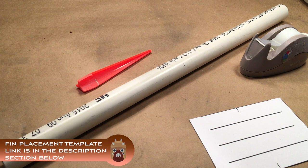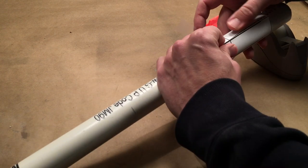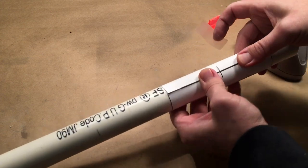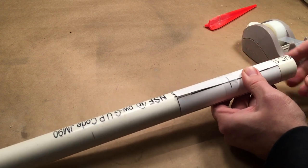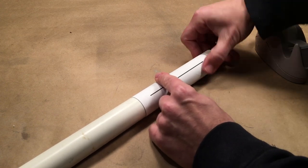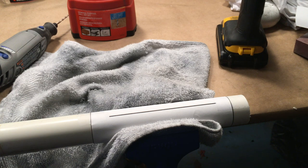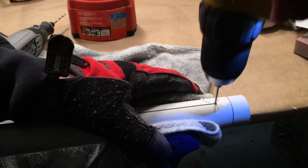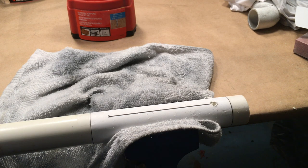Print out the fin placement template and affix it to the 22 inch length of one inch PVC pipe. Tape it down with cellophane tape. Secure the pipe in a vise. Drill a 1/8 inch hole in one of the ends of the template lines. Using a Dremel cutting bit, cut along the line. Repeat for the remaining three lines.